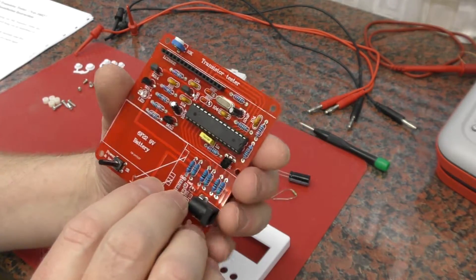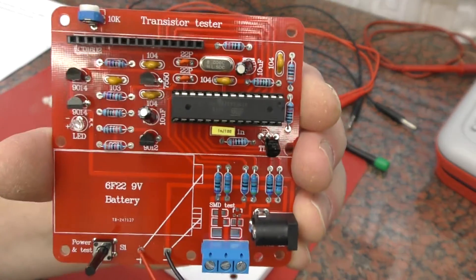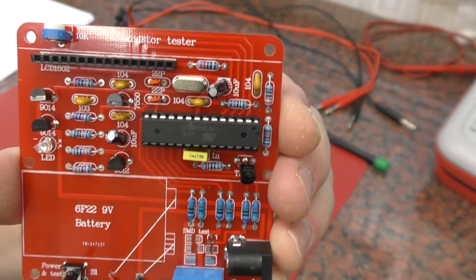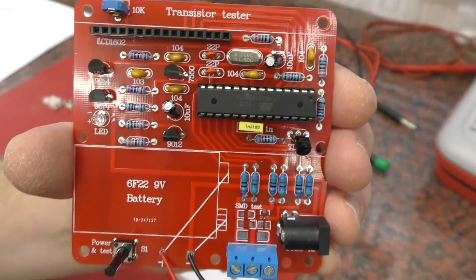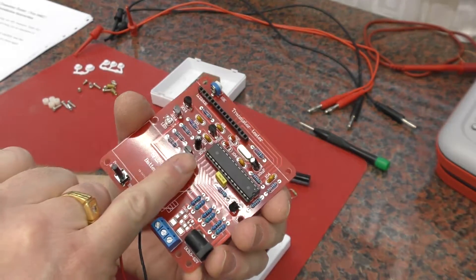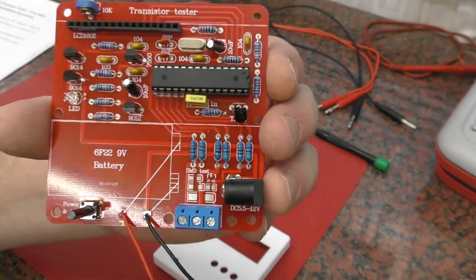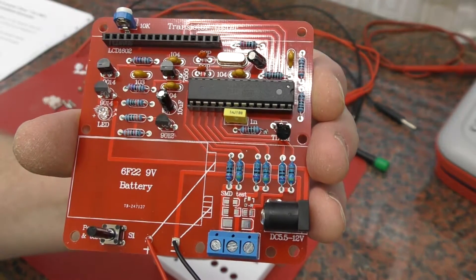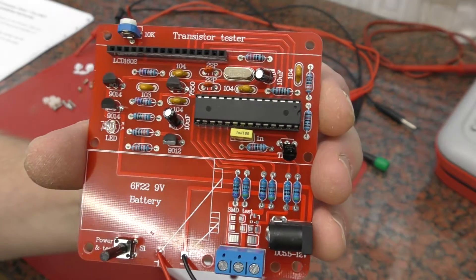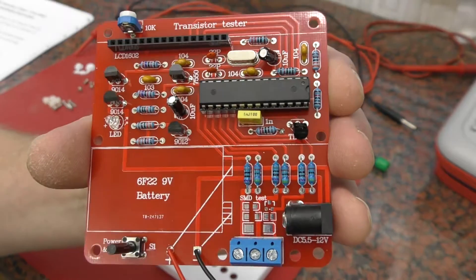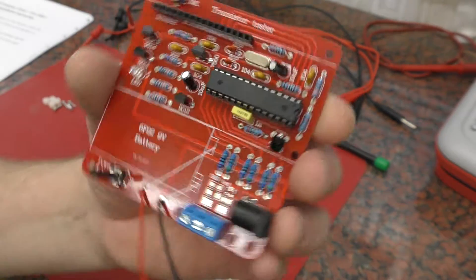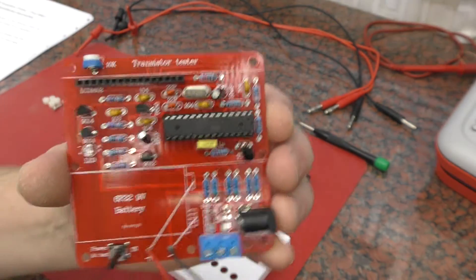It couldn't be easier to build. All of the components are clearly marked on the circuit board, and the actual components themselves are all marked except the resistors. So you'll need to be familiar with the color code of the resistors. If you're not, just get a meter out and make sure you know which is which and where to put them.